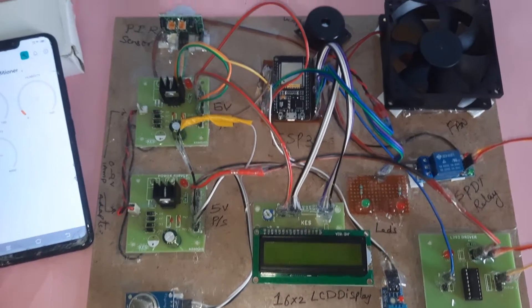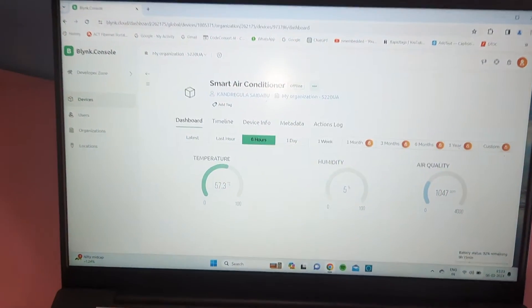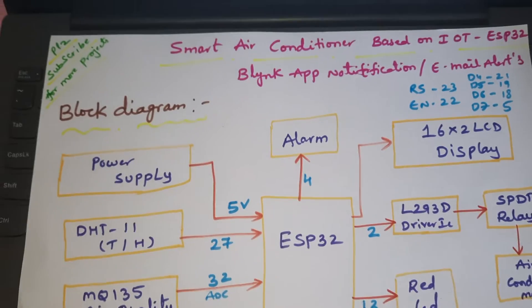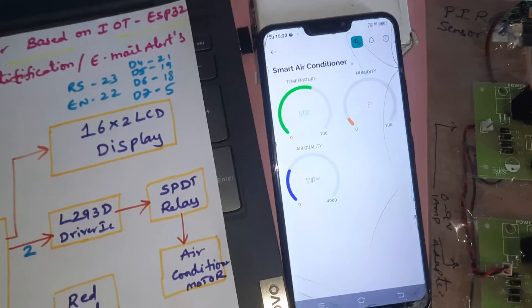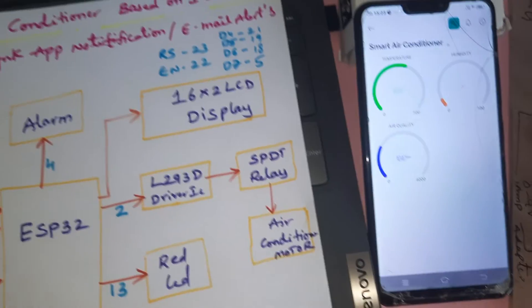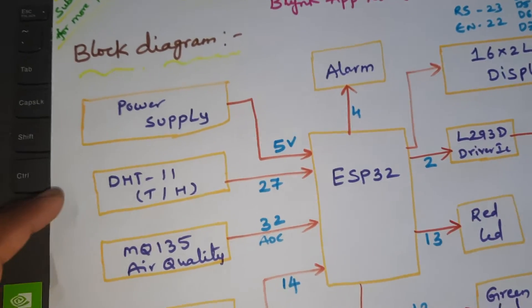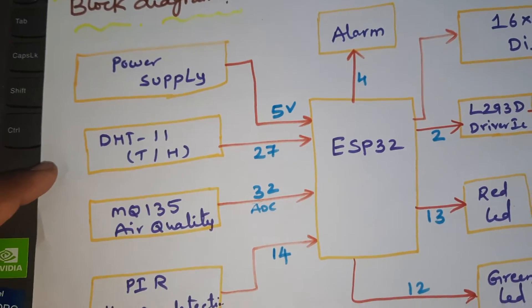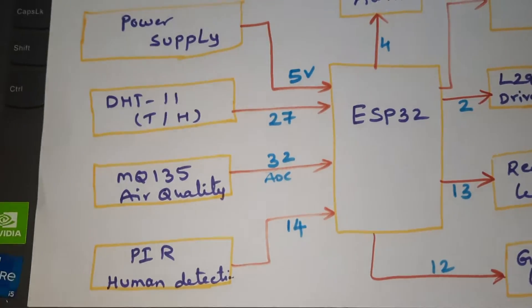Hi, we are from SVS Embedded. The project title is Smart Air Conditioner based on IoT using ESP32. We are using the Blynk application with notification alerts and email alerts. In this project we are using three sensors: DHT11 temperature and humidity sensor, MQ135 air quality sensor, and a PIR human detection sensor.